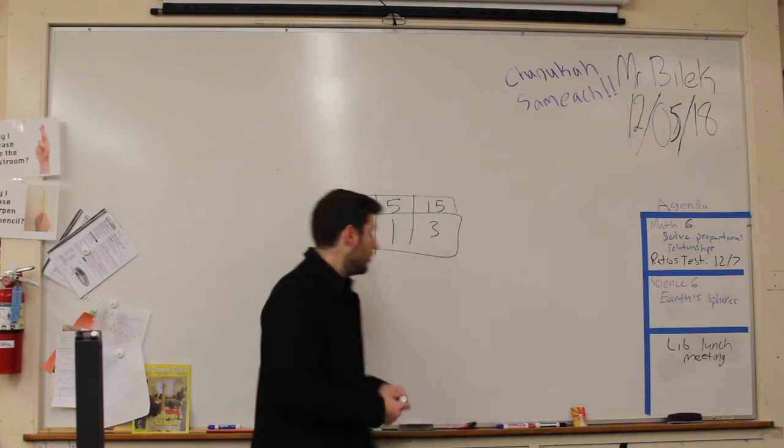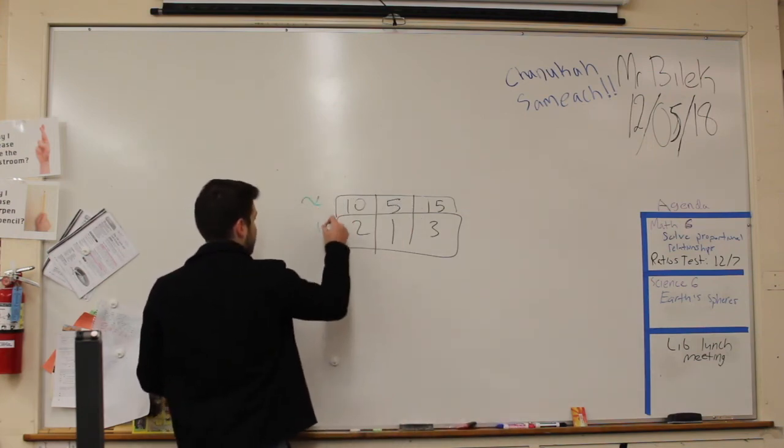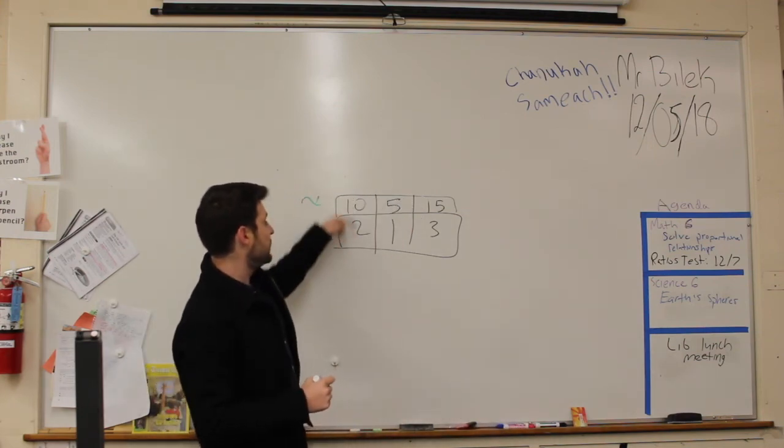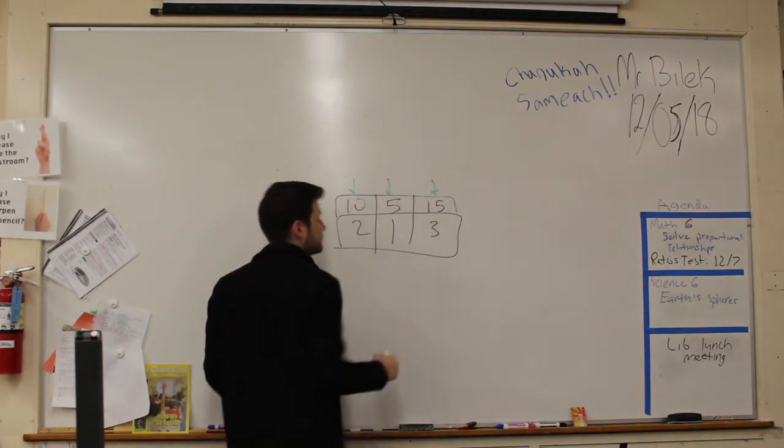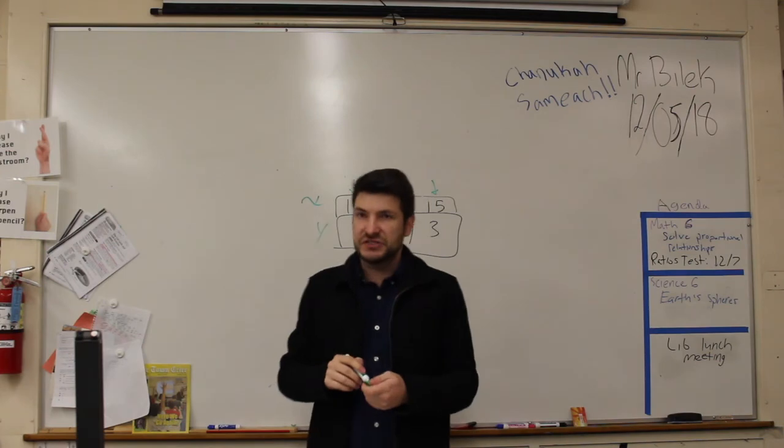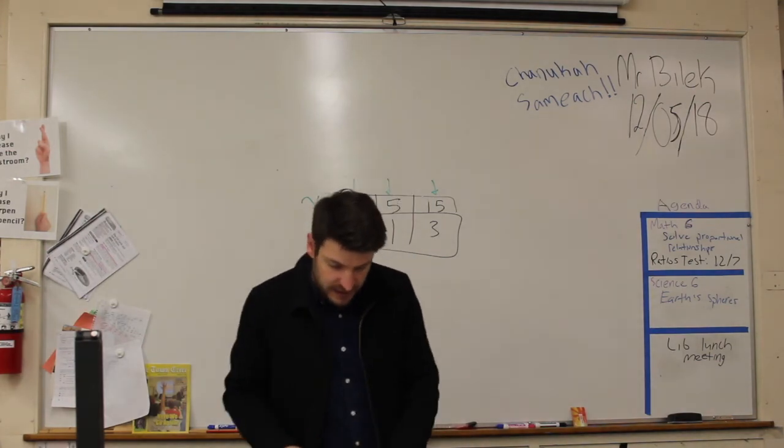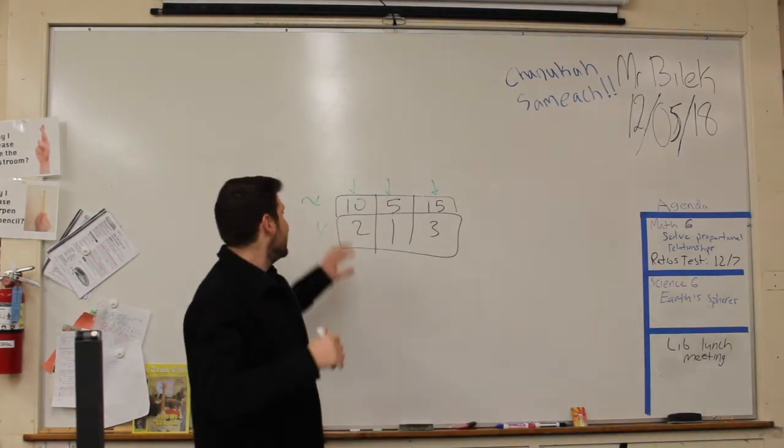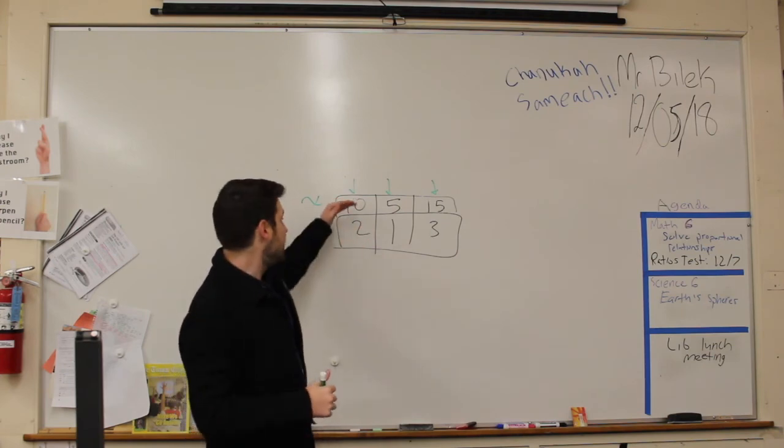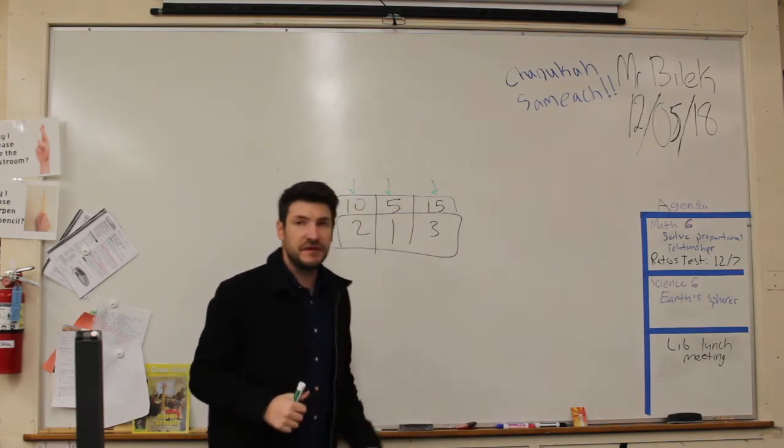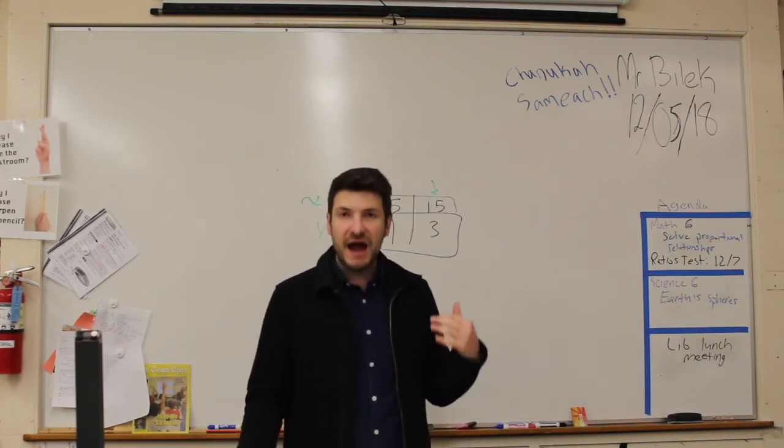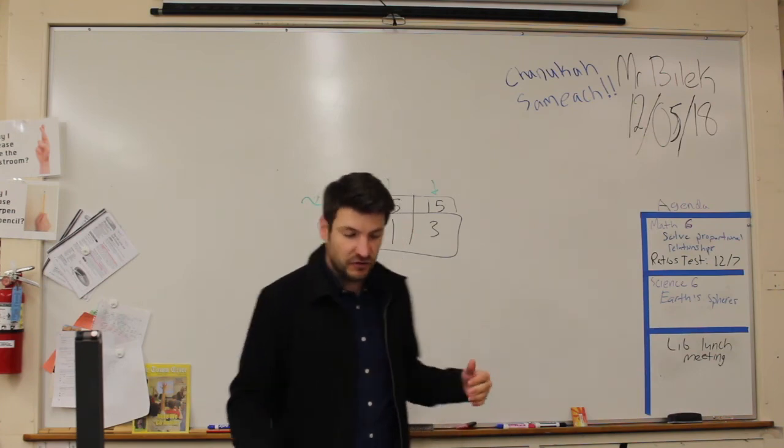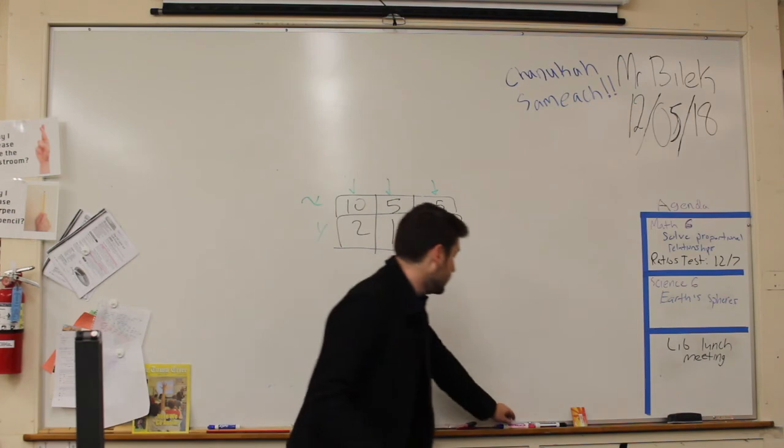Now, we know that this is our x, and this is our y. Here's a ratio here, here's a ratio here, and here's a ratio here. And this helps us organize. Now, these ratios, 10 to 2, 5 to 1, 15 to 3, all happen to have the same unit rate, and they have this same relationship, and that relationship breaks down to 5 to 1.